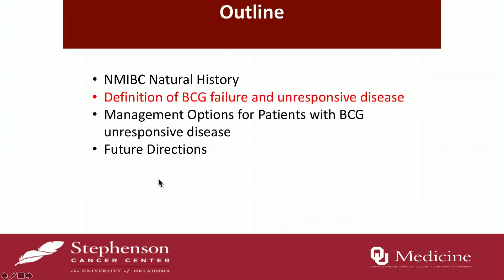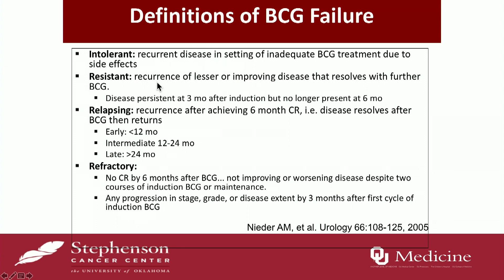How do we define BCG failure? There are several definitions. Traditionally, four main types were published. Intolerant means the patient cannot tolerate the side effects. Resistant means disease is still present at three months but gone at six months. Relapsing means there is a response at six months but disease returns — subdivided into early (within 12 months), intermediate (12 to 24 months), or late (greater than 24 months). Patients with late relapse respond better to another round of BCG.